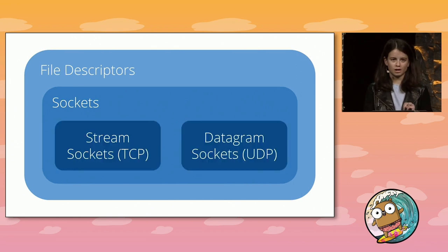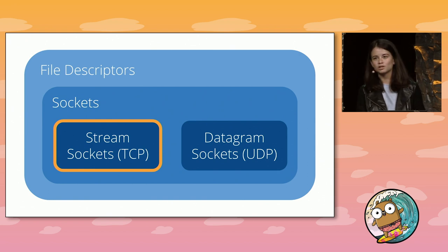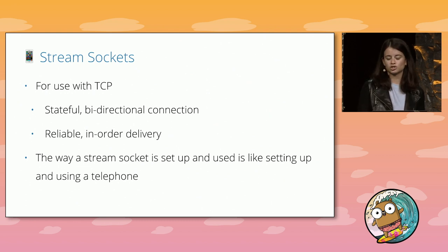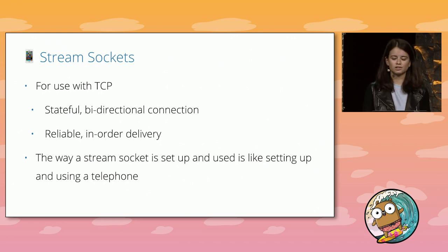There are two types of sockets: stream sockets and datagram sockets. Let's first learn about stream sockets, which are used by TCP, the transmission control protocol. TCP maintains a connection state between a server and a client, which guarantees the delivery of packets and their order. I think that setting up and using a stream socket is a lot like setting up and using a phone, so let's apply this analogy as we walk through the syscalls in C used to open up and use stream sockets.